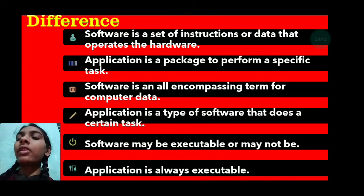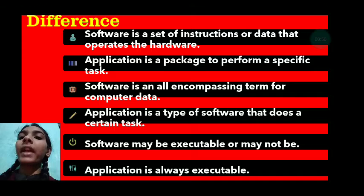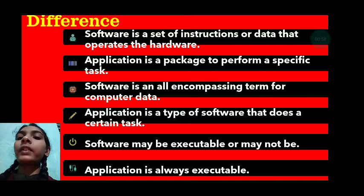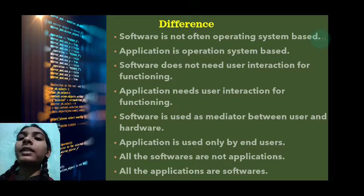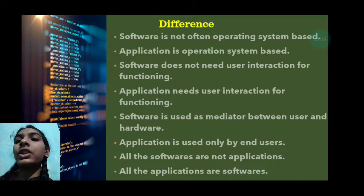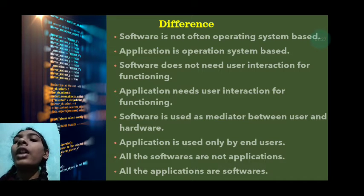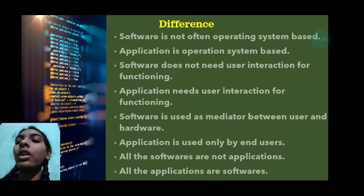Let's see the difference between software and application. Software is a set of instructions or data that updates the hardware, but application is a package to perform a specific task. Software is an all-encompassing term for computer data, but application is a type of software that does a certain task. Software may be executable or may not be, but application is always executable. Software is not operating system based, but application is operating system based. Software does not need user interaction for functioning, but application needs user interaction for functioning. Software is used as a mediator between user and hardware, but application is only used by end users. All softwares are not applications, while all applications are softwares.